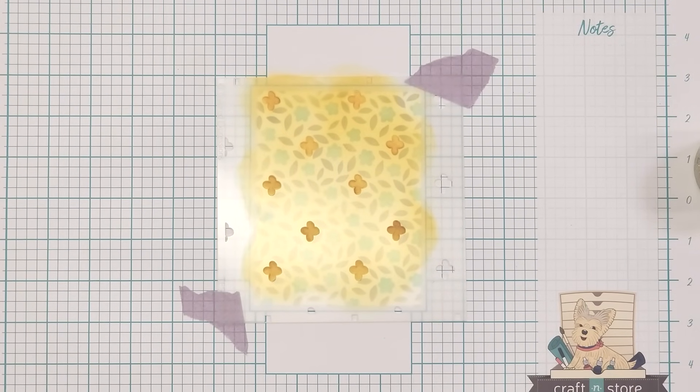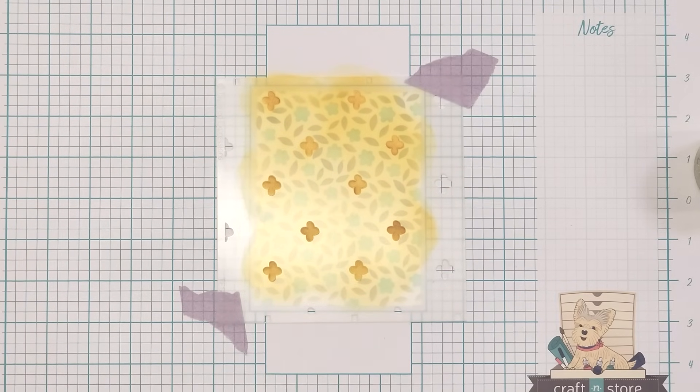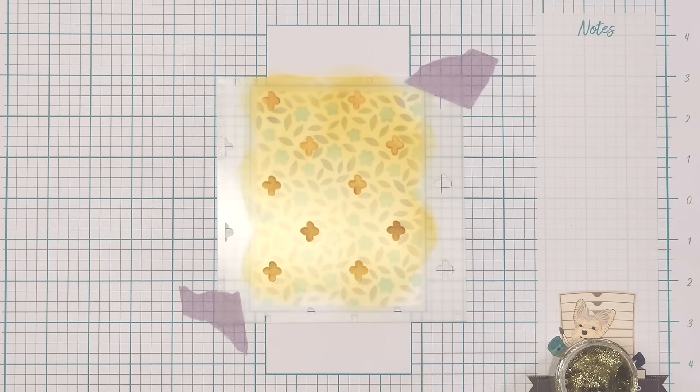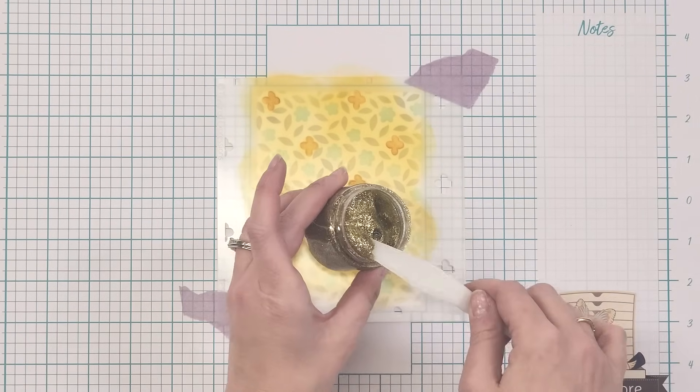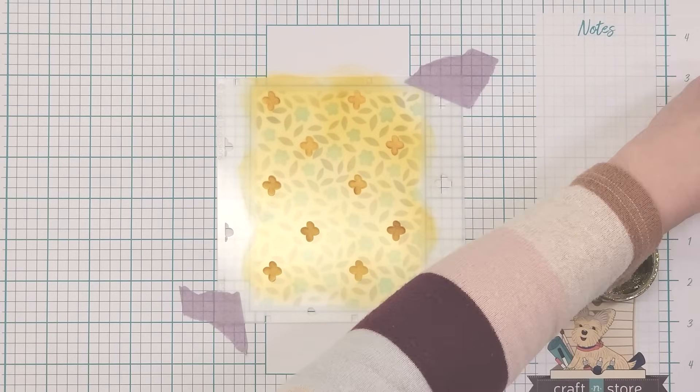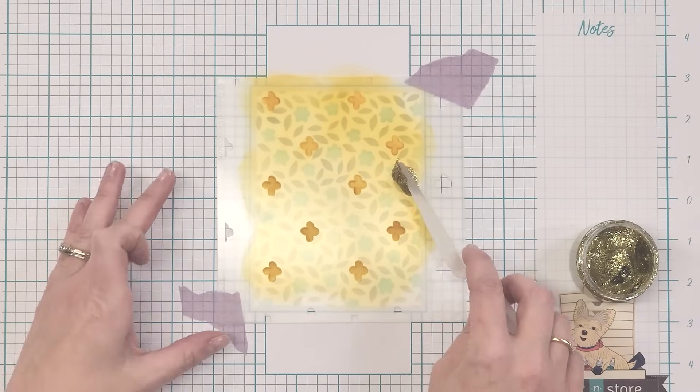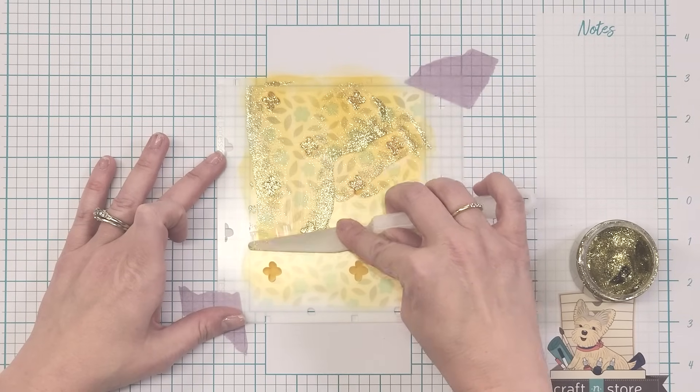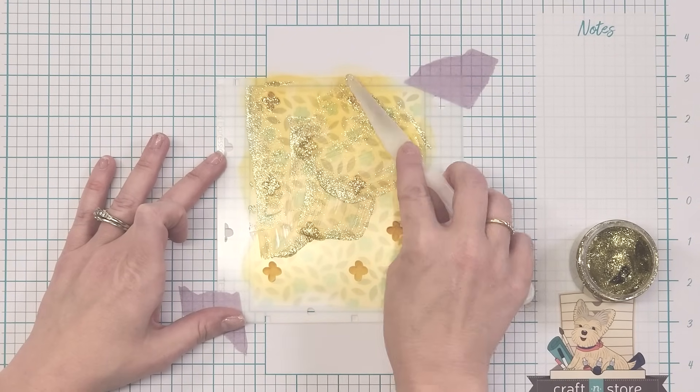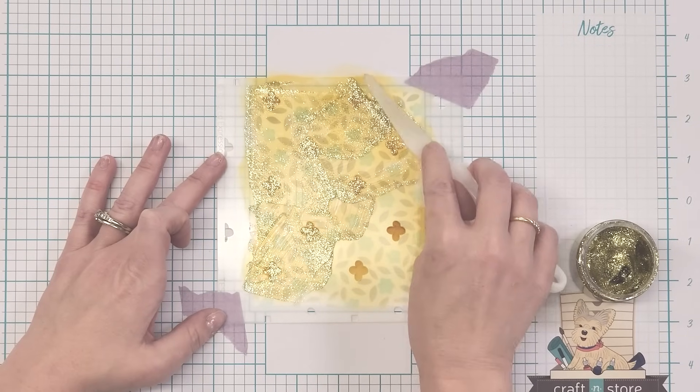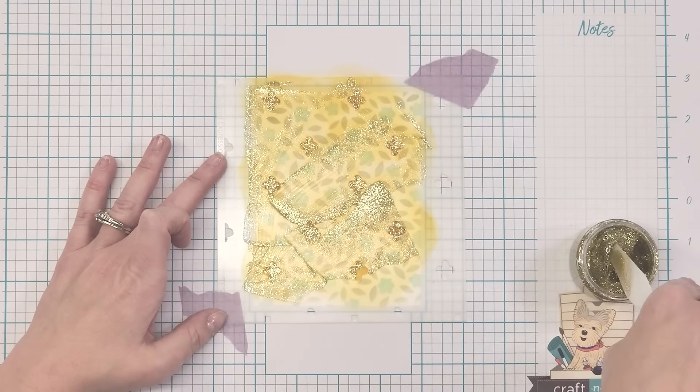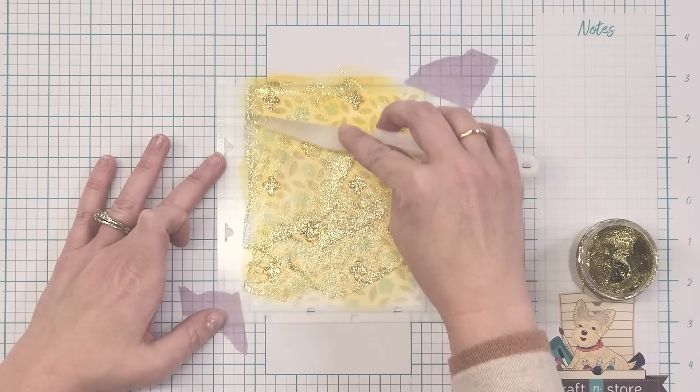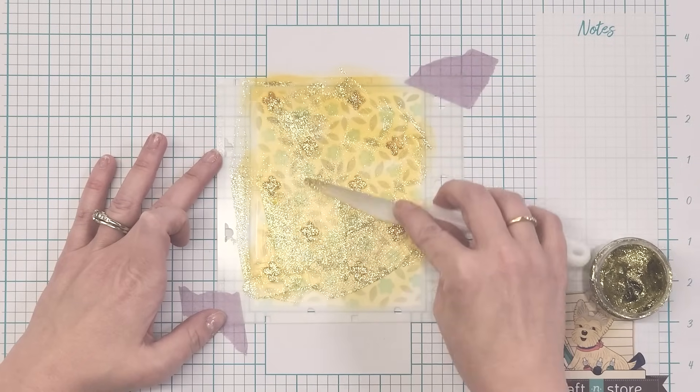Alright. And now, if you wanted to reuse your glitter glaze, you would want to wipe off that ink, but you do not have to. I'm just going to use this one and then I'll just throw my glaze away that I don't use. And I'm just going to go in here, scoop out a little bit of this. This one I'm using is the Brutus Monroe Glitter Glaze. And then I'm just going to bring that on and just swipe that across my stencil. Making sure I'm filling in all the space. Here we go. All right.